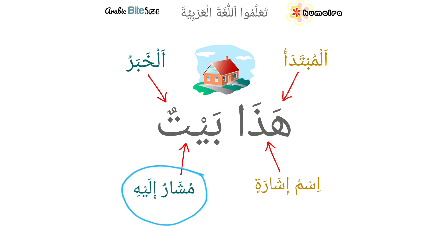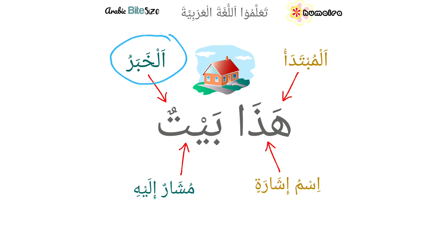This is the خبر — the predicate. The خبر are of three types, and this one here in front of us is the خبر which is مفرد — the خبر which is on its own. Inshallah, we're going to study more of the خبر and the types of خبر in the future.